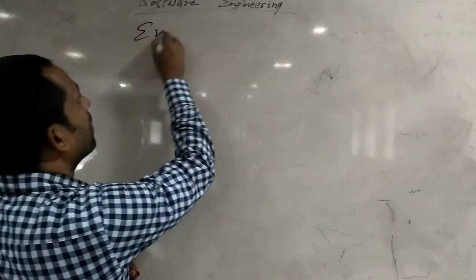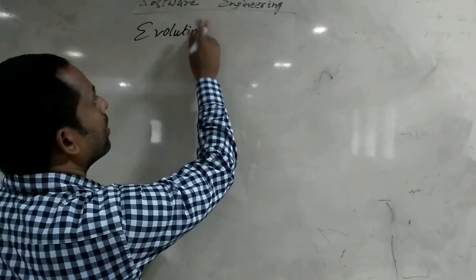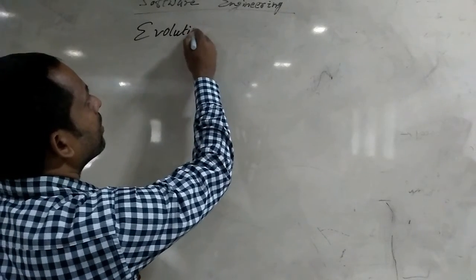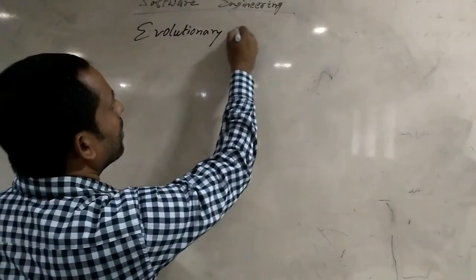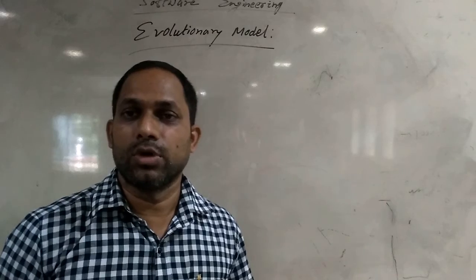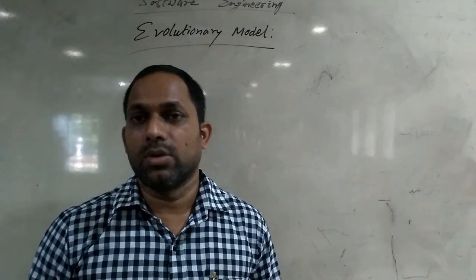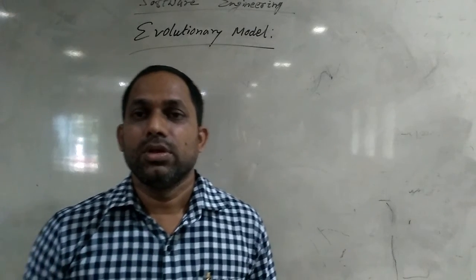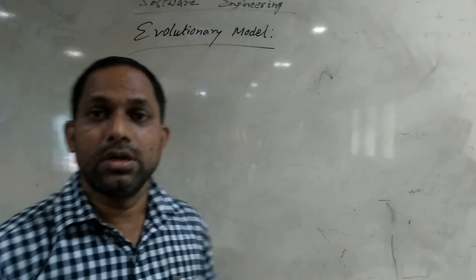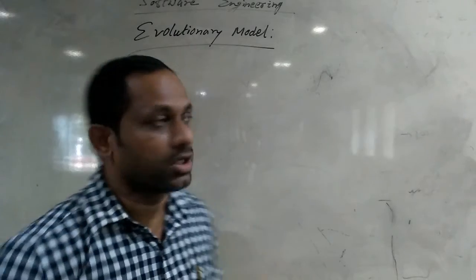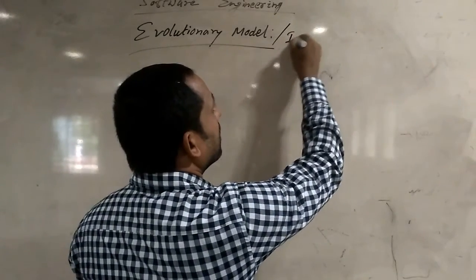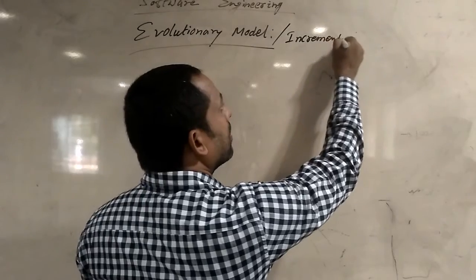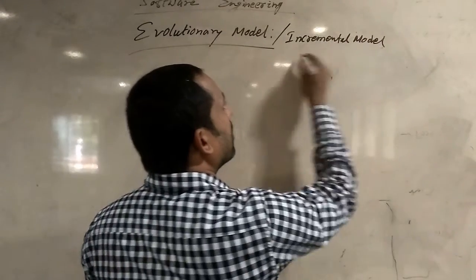Today we will learn a new modern model, that is the evolutionary model. This is another model. So first we studied the classical waterfall model, after that the iterative waterfall model, after that the prototype model, and the next one is the evolutionary model. You can also call it the successive model or the incremental model.